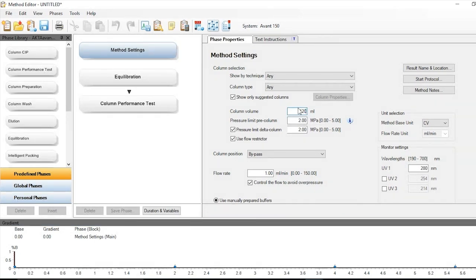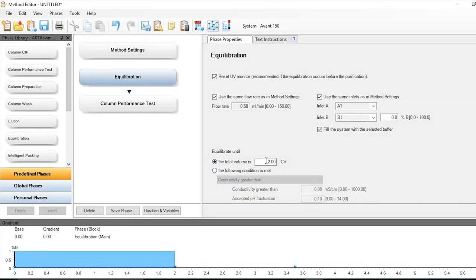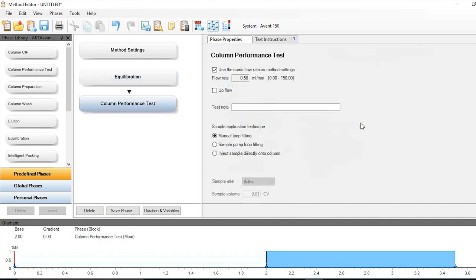Here, Superdex 75 prep grade was packed in an XK 16 over 70 column to a volume of 120 milliliters, so that the pressure limits were set accordingly and the sample volume was set to 1.2 milliliters.